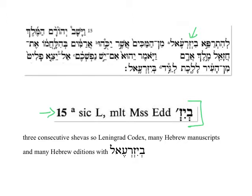What the student should get in the habit of doing is, whenever possible, translating the apparatus — that is, decoding the apparatus, but putting it in very straightforward English. In this case, we could say something like: the three consecutive schwas in the Leningrad Codex. Many Hebrew manuscripts and many Hebrew editions, however, have the Yisrael reading. And so putting it in straightforward English is probably the way to go.